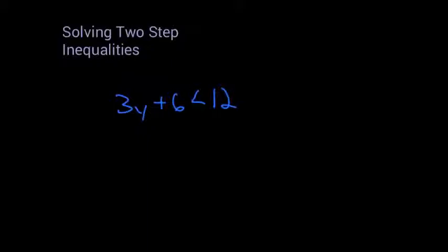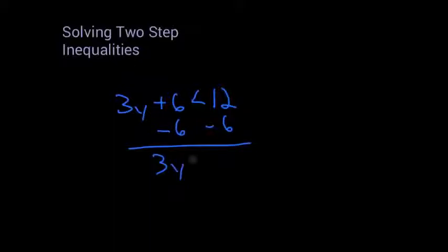So I have 3y plus 6 is less than 12. Get rid of that plus 6 — the opposite of plus 6 is minus 6. So I'm going to subtract 6 from both sides. I get 3y is less than 12 minus 6, which is 6.